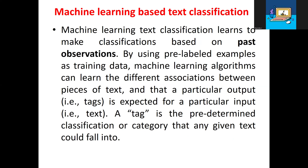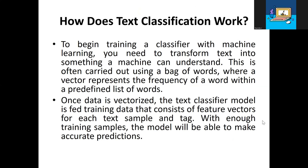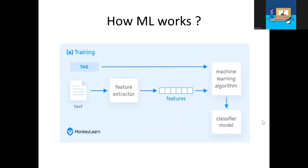In machine learning-based Text Classification, the algorithm learns to make classifications based on past observations — that is, pre-labeled examples and training datasets. The machine learning algorithm is given a tag and predefined classification categories, determining which type each item belongs to, by understanding the machine representation and word frequency within a predefined list of words. This way, we vectorize different sample models to make accurate predictions.